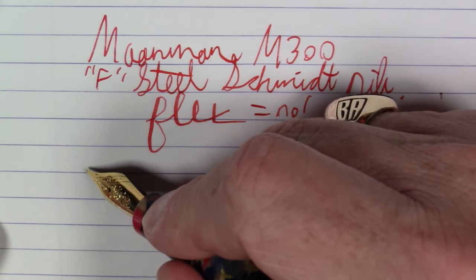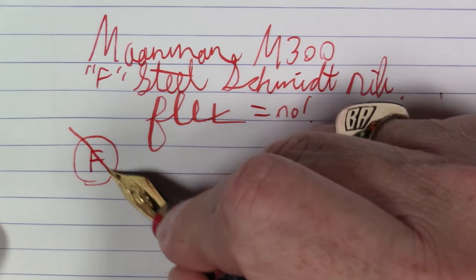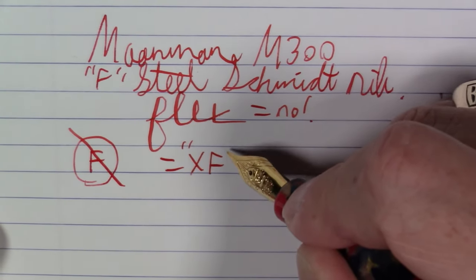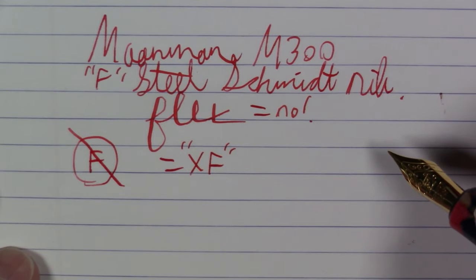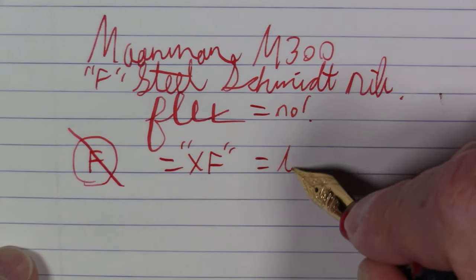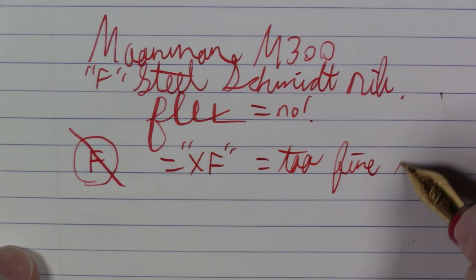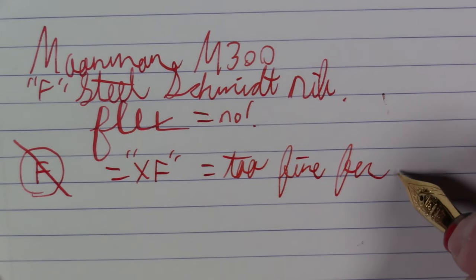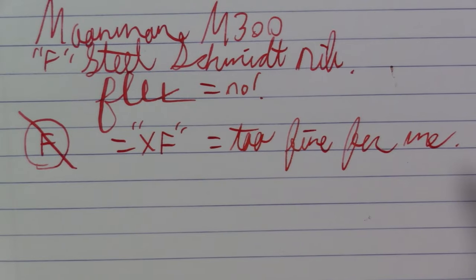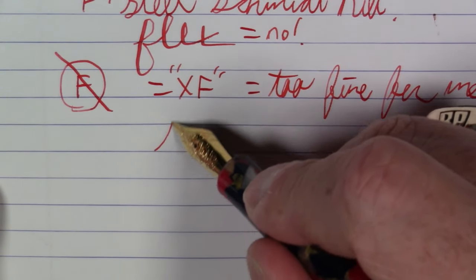One thing I will say is this is, in my mind, not a fine nib. This is an extra fine. That is for sure. So I would definitely classify this nib as an extra fine, which means it's a bit too fine for me. But depending what you like, you may just absolutely love it. I tend to like my nibs a bit broader, but as an extra fine goes, it is definitely quite smooth, actually.